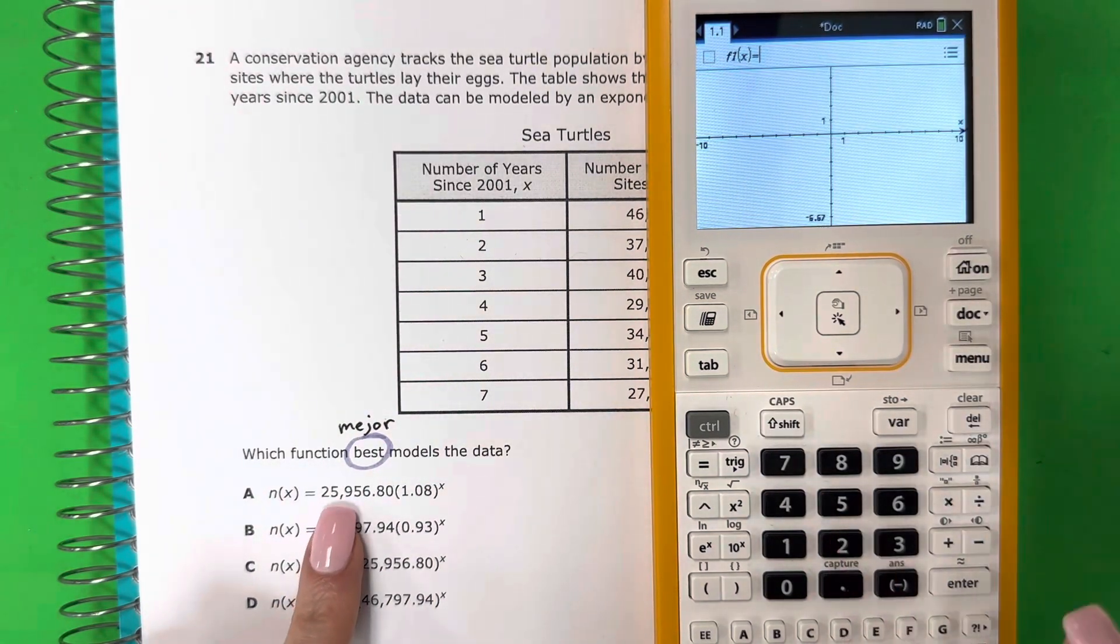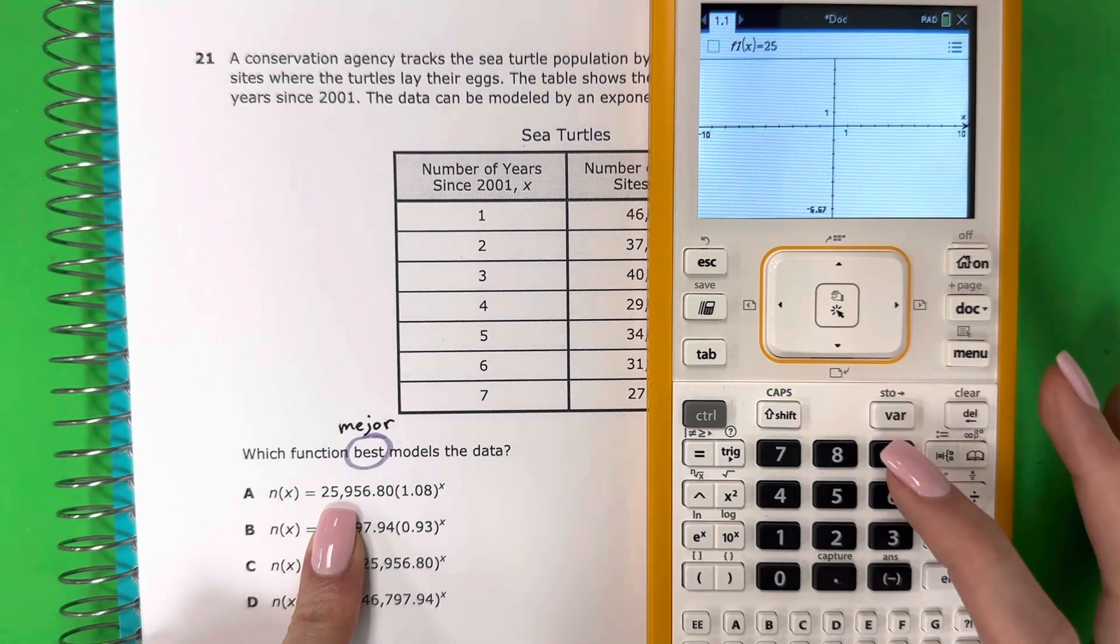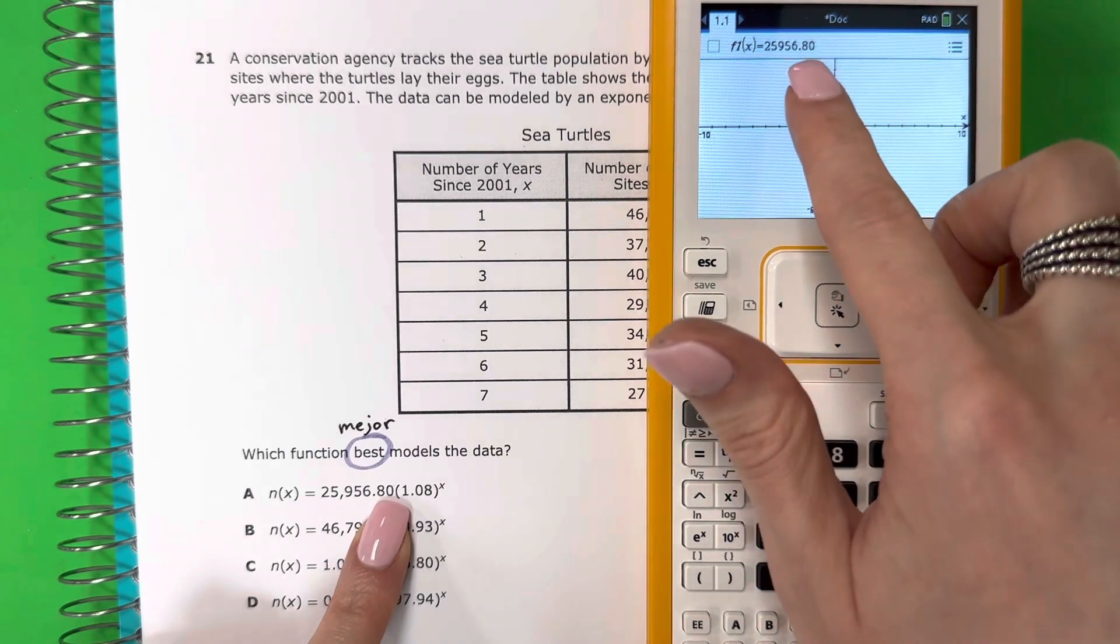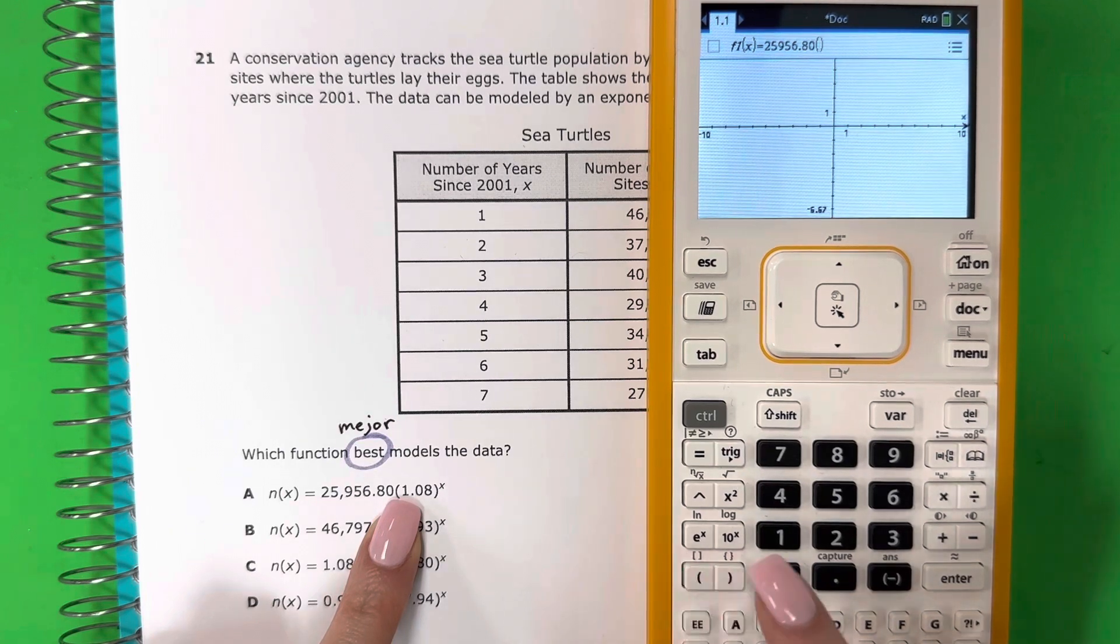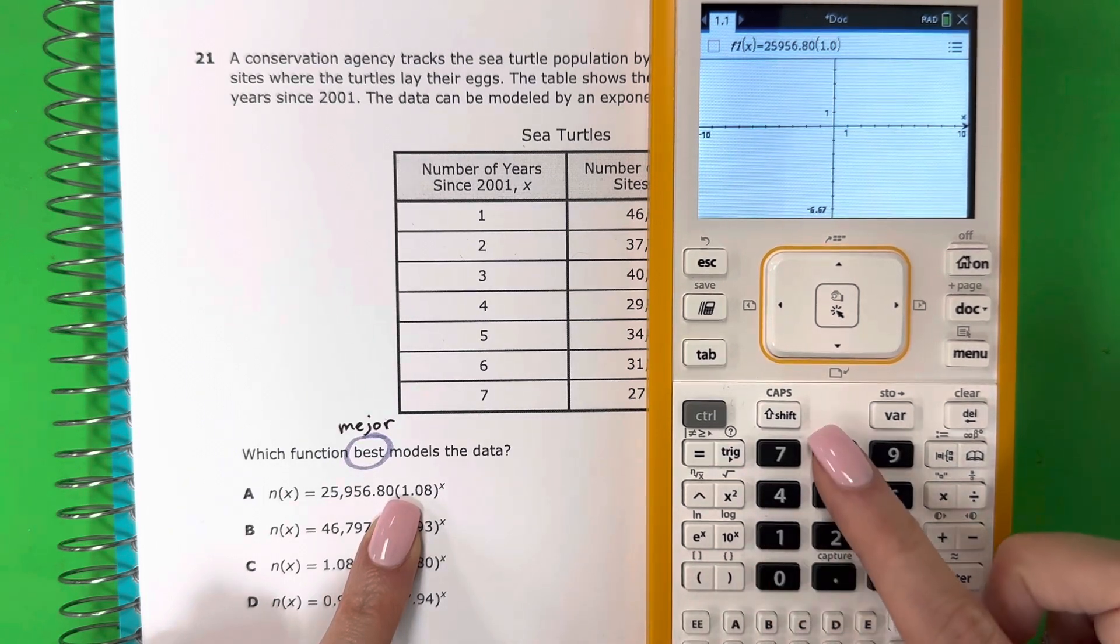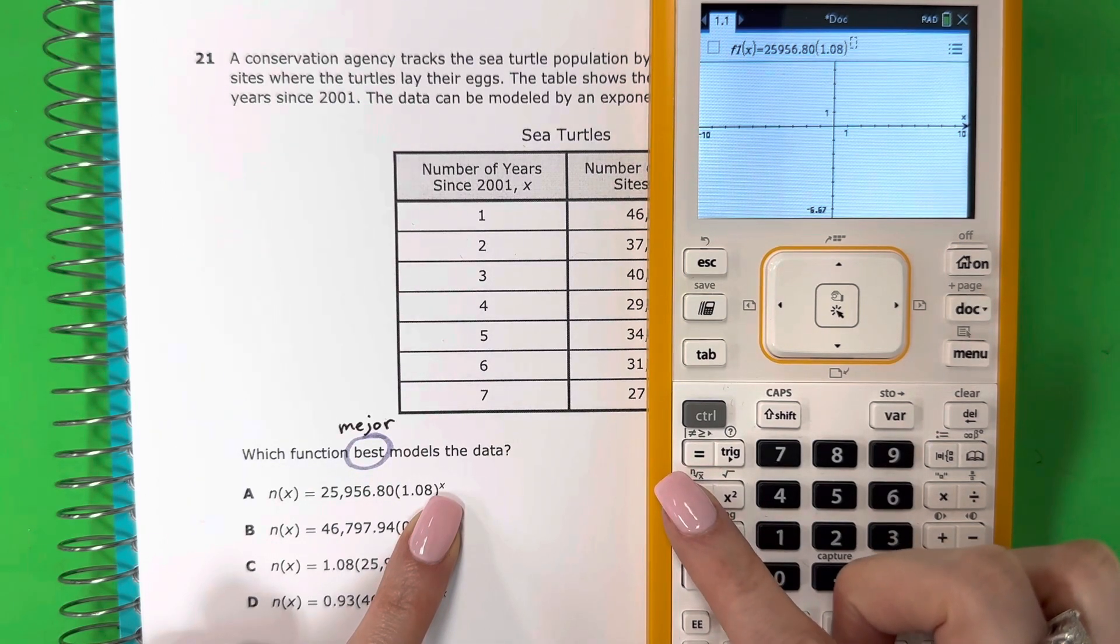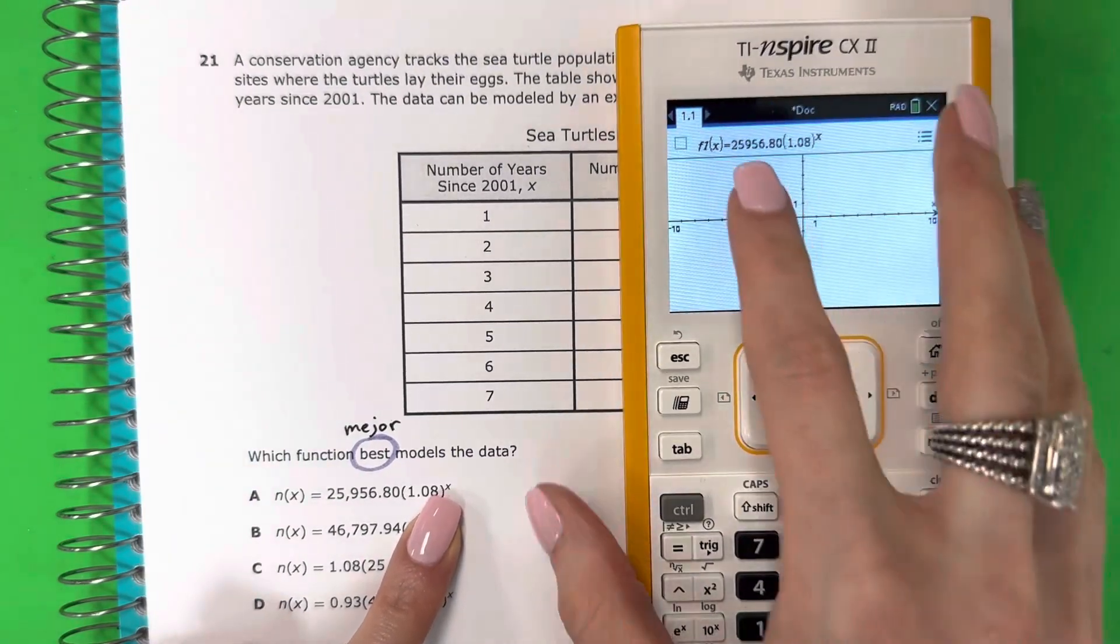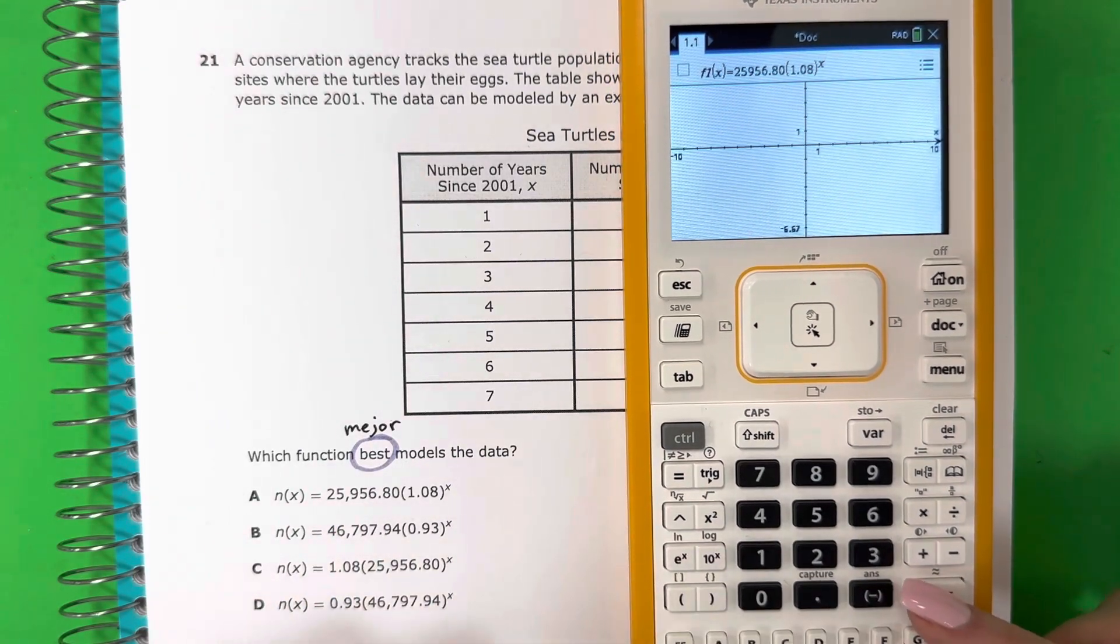And let's start with the first one. 25,000, no commas here, sin coma, 25,956.80, points, yes, you can put decimals, si pueden poner decimales. Parenthesis, 1.08, close parenthesis, the exponent x, exponente is this one, and then x is here. Make sure you have it exactly the same, and then go ahead and push enter.